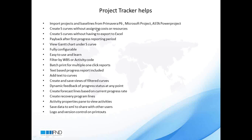Project Tracker gives the S-curve without assigning cost or resources — this is very important. Even if your program has no cost or resource, you can get the S-curve inside Project Tracker. There is no need for exporting to Excel or manual work. You can also see the progress, recovery, and comparison of two baselines. There is a gunshot view on the S-curve, which is very hard to do in Excel. It is fully configurable, very easy to use, requires no training or implementation — users just download, install, and start using it.